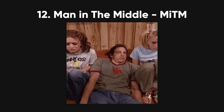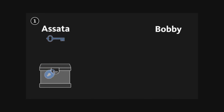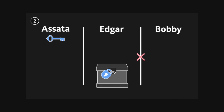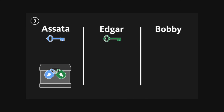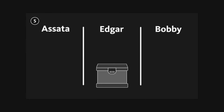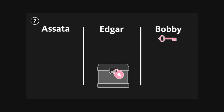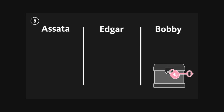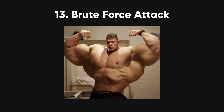Man in the middle, or MITM. In an MITM attack, hackers secretly intercept communication between two parties. They can steal or change the information being exchanged — like someone eavesdropping on your phone call and altering what's being said.